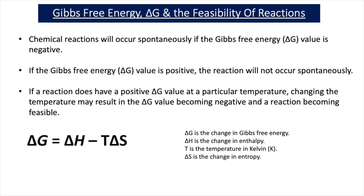In our previous video lesson, we learnt that chemical reactions will occur spontaneously if the Gibbs free energy delta G value is negative. And if the Gibbs free energy delta G value is positive, the reaction will not occur spontaneously. Now if a reaction does have a positive delta G value at a particular temperature, a change in temperature may result in the delta G value becoming negative and the reaction becoming feasible.